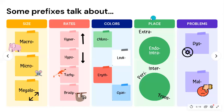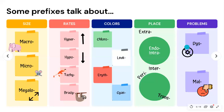We also have prefixes related to place: 'endo' and 'intra' both mean inside; 'extra' means outside; 'inter' means between; 'peri' means around; and 'trans' means across. Finally, prefixes related to problems include 'dys,' meaning something is not working properly, and 'mal,' meaning bad.